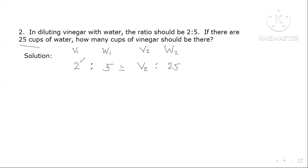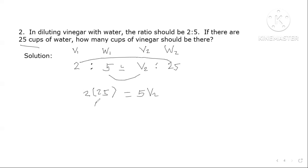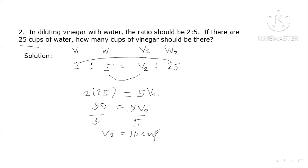By the fundamental law of proportion, the product of the extremes must equal the product of the means. So 2 times 25 must equal 5 times v₂. Now 2 times 25 is 50, so 50 equals 5·v₂. To solve for v₂, we divide both sides by 5. So v₂ equals 10. There should be 10 cups of vinegar if there are 25 cups of water.